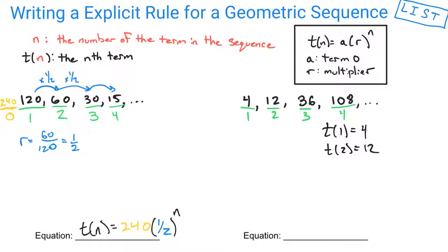We need to figure out what term 0 is. In order to do that, we need to know what our multiplier is. This one is a little more straightforward because you can just see pretty quickly that r is equal to 12 divided by 4, where your multiplier is equal to 3.